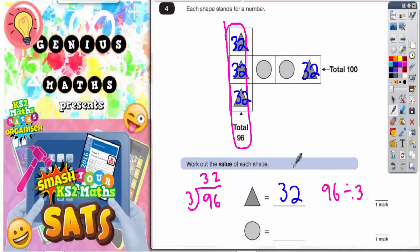So this triangle is worth 32, even though it's not in the same column. It's still got to be worth 32 because it's a triangle and all the triangles are worth 32. What we do know is that this total across the row of the two triangles and the two circles together makes 100.